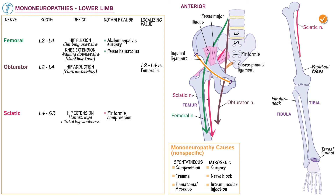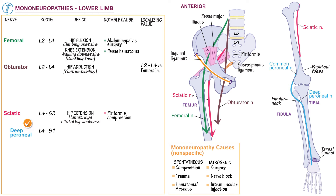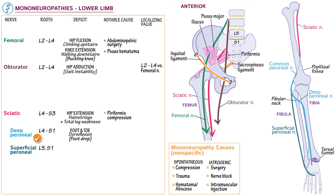Show that the sciatic nerve passes down the posterior thigh. Then proximal to the popliteal fossa, indicate that it divides into the common peroneal nerve, which passes inferolaterally through the popliteal fossa, wraps around the fibular neck, and then splits into the deep peroneal nerve — supplied by L4 to S1 — which innervates the anterior leg and dorsal foot muscles to provide foot and toe dorsiflexion; failure causes foot drop and a steppage gait. The superficial peroneal nerve, supplied by L5 to S1, innervates the lateral leg muscles, so weakness causes failure of foot eversion. Indicate the important peroneal nerve compression site at the fibular neck.